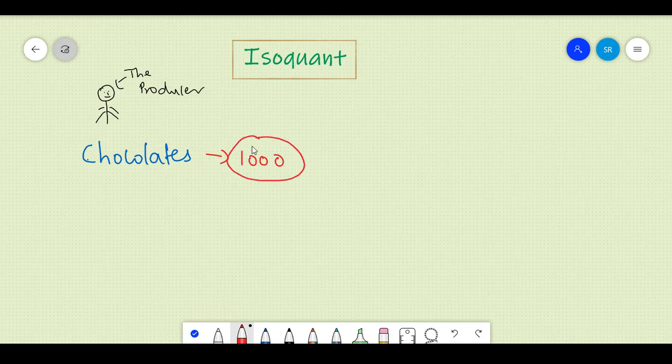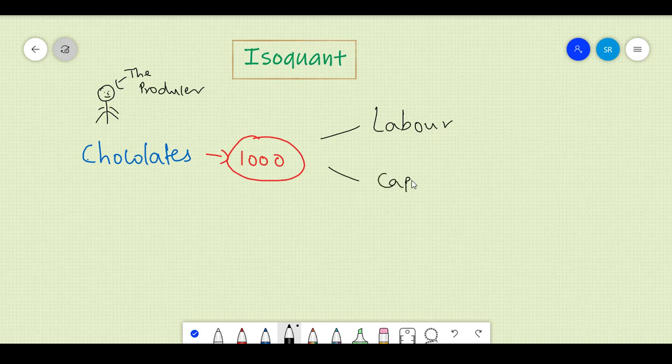Now if you wish to produce thousand chocolates, you can either use laborers and make them work for the entire day to produce thousand chocolates or maybe you can use a machine that produces thousand chocolates.